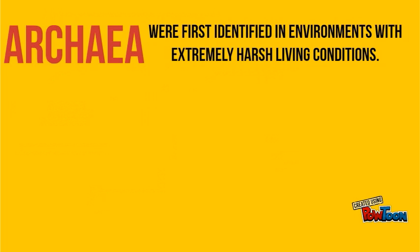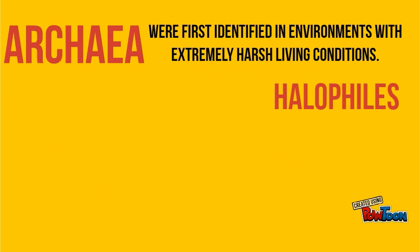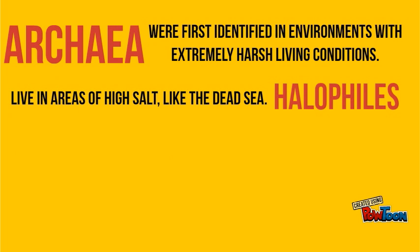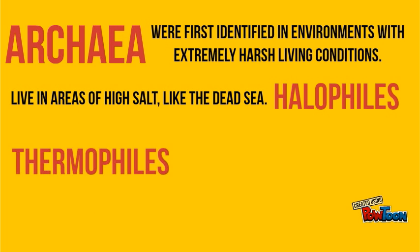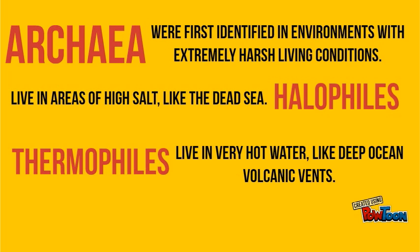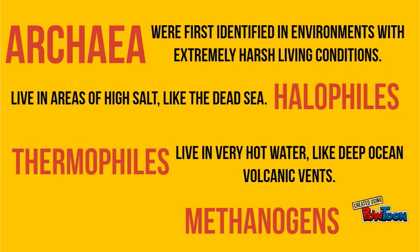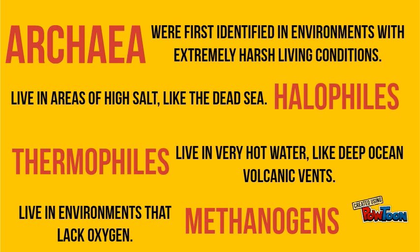Archaea were first identified in environments with extremely harsh living conditions, and they are usually grouped by the extreme conditions where they are found. The halophiles live in areas of high salt, such as the Dead Sea in Israel and Jordan, and Great Salt Lake in Utah. The thermophiles live in very hot water, such as deep ocean volcanic vents, where the water can be over 100 degrees Celsius. The methanogens live in environments that lack oxygen; they produce methane gas and are often found in landfill sites.